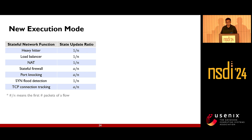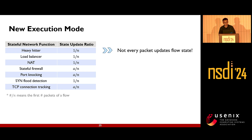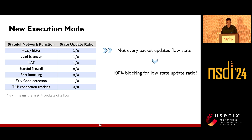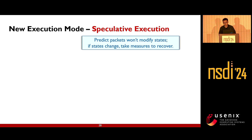For the execution mode of stateful functions, the traditional mode blocks the processing of subsequent intra-flow packets. However, for most complex stateful functions, the state update ratio is low — not every packet modifies the flow state — so the probability of state conflict when processing in parallel is relatively low. Rather than blocking packets with 100% probability to maintain state consistency, we propose speculative execution: we predict that packets will not modify the state, so packets in the same flow can be processed in parallel. Once a packet does modify the state, measures are taken to ensure subsequent packets read the latest state.